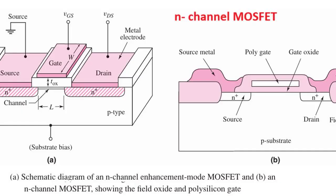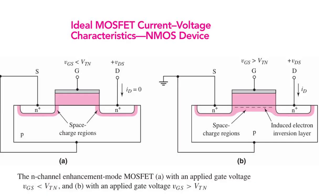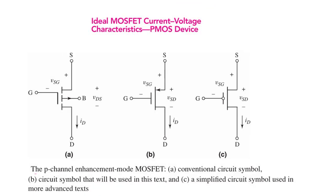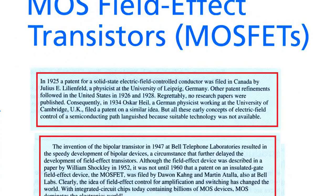On the other hand, a MOSFET, or Metal Oxide Semiconductor Field Effect Transistor, is a voltage-controlled device. It has three terminals: gate, drain, and source. A voltage applied at the gate controls the current flowing between drain and source.